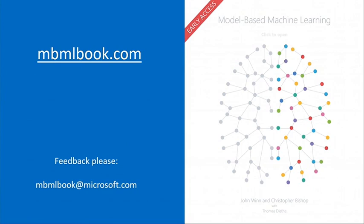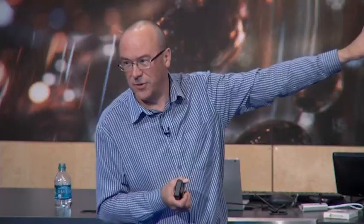If you'd like to learn more about the model-based view of machine learning, there's a book coming out — an interactive online book, freely available now in early access form. Go to the URL to look at it; we just ask for feedback in return. Several publishers have asked us to produce a hardback copy, which we've agreed to. All royalties from the physical copy will go to the Cystic Fibrosis Trust, matched dollar for dollar by Microsoft. Please buy the physical book, and then read the interactive online version which has more features and details. Thank you very much.